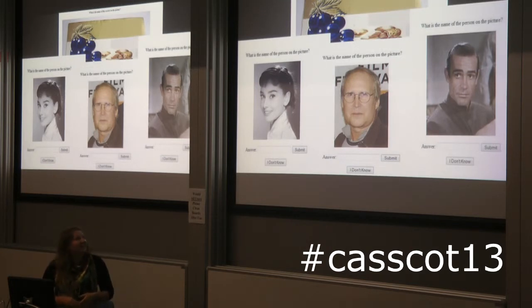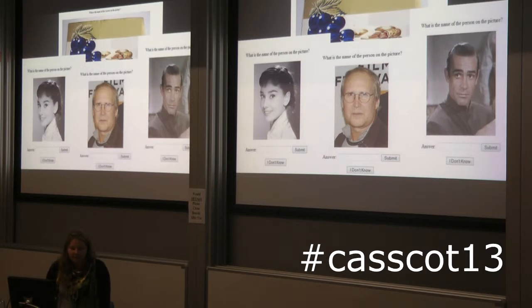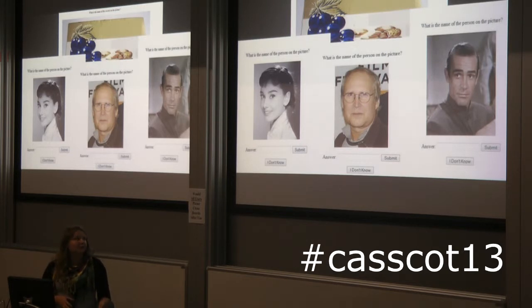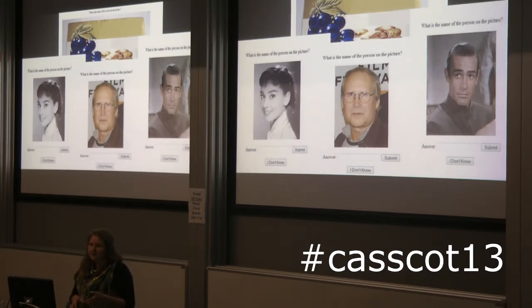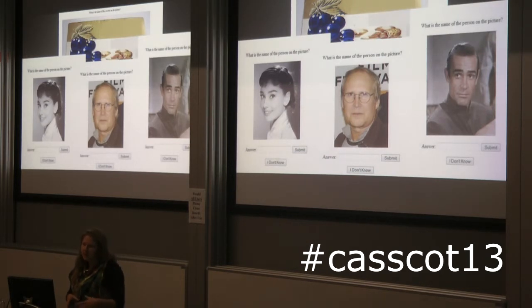Of course, children might know some things — like many of them might know who Sean Connery is and how he looks — but they will not match the knowledge of adults. So in theory, if we ask enough questions, we should be able to make the distinction. But to be able to properly assess the effectiveness of this method, we first need to carry out an experiment to derive a set of images that would allow us to do so reliably.